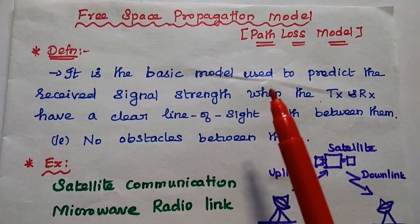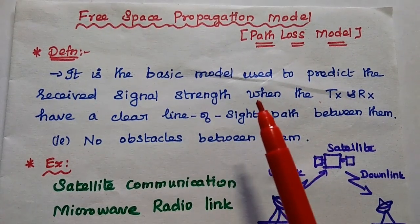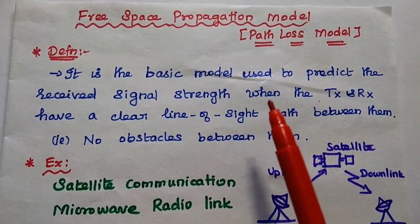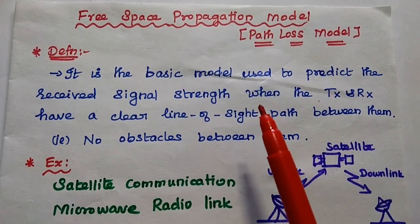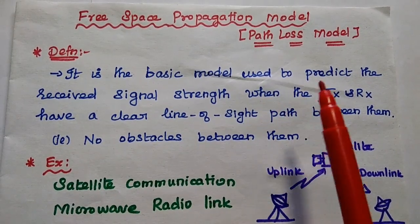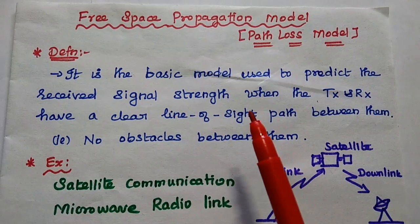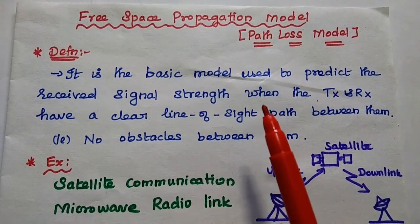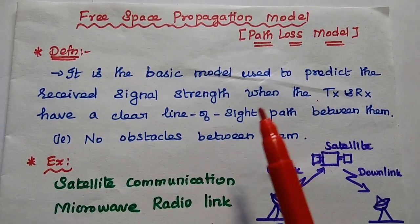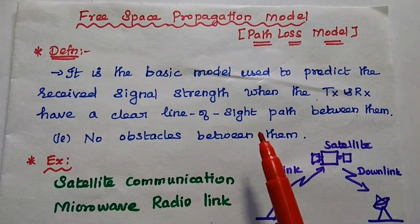Dear students, now we are going to discuss the free space propagation model. This propagation model is also known as the path loss model. In general, this propagation model is mainly used to predict the strength of the received signal at the receiver.